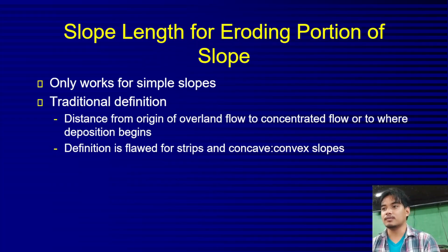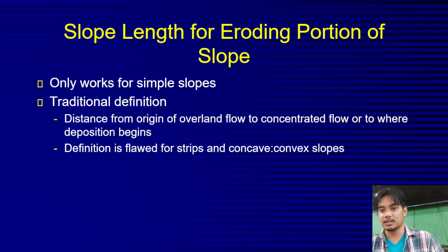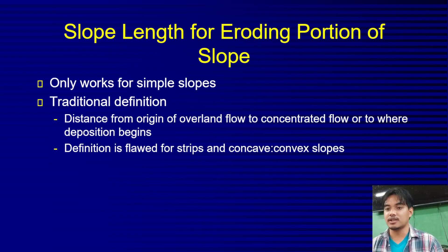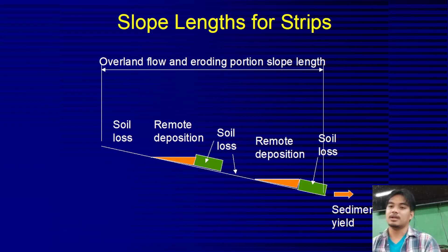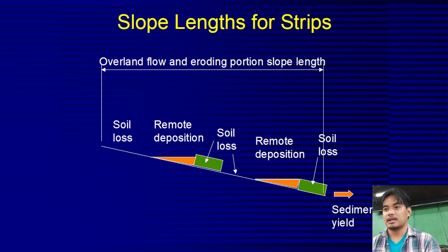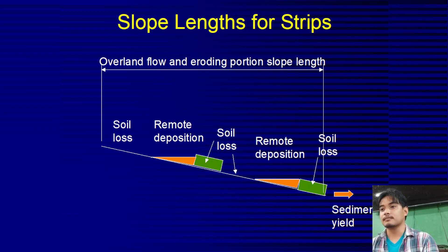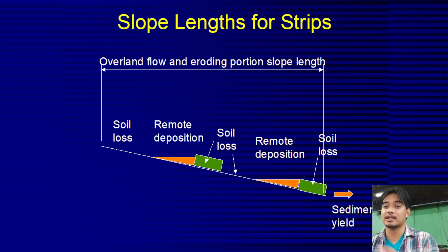Slope length applies to the eroding proportion of the slope. It only works for simple slopes. The traditional definition is the distance from the origin of overland flow to where concentrated flow begins or where deposition begins. For a simple slope, the entire slope length is also the eroding portion of the slope.